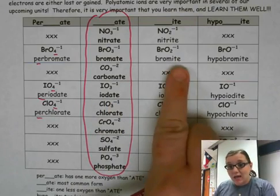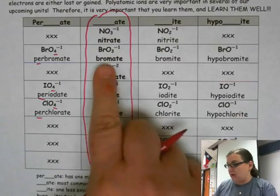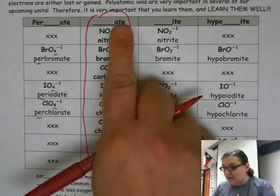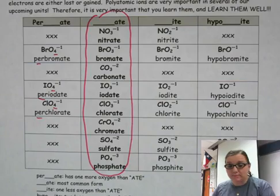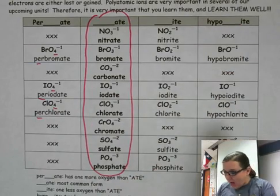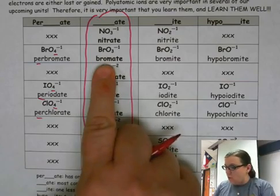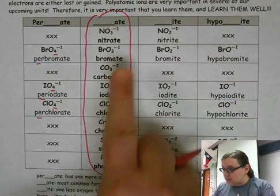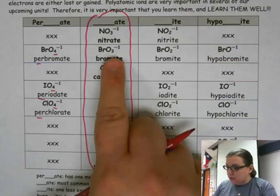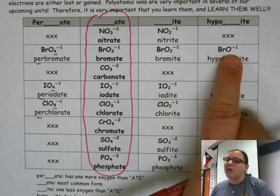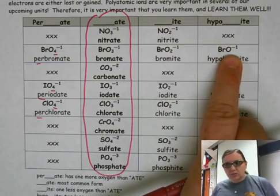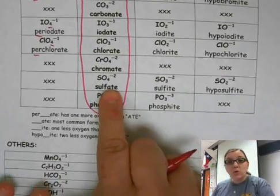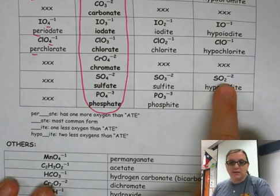As you go down to the '-ites' — so nitrate to nitrite, or bromate to bromite — all of these have one less oxygen than the '-ate' did. So as you go from '-ate' to '-ite,' you lose an oxygen. And as you go all the way down to 'hypo-ite,' you notice we went bromate to hypo-bromite, or iodate to hypo-iodate — your number of oxygens decreases by two when you make that jump. For example, we went from three oxygens to only one oxygen, and when you only have one oxygen, you don't put a subscript — just leave it blank. Like sulfate going to hypo-sulfite jumps from four all the way down to two.